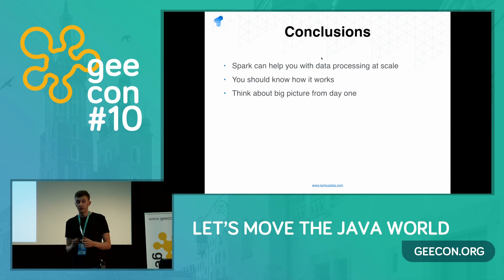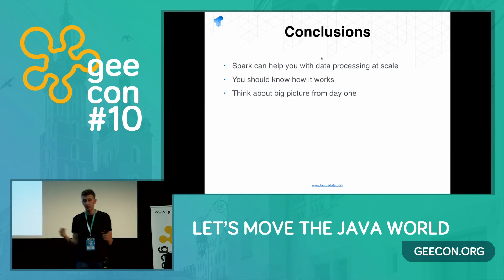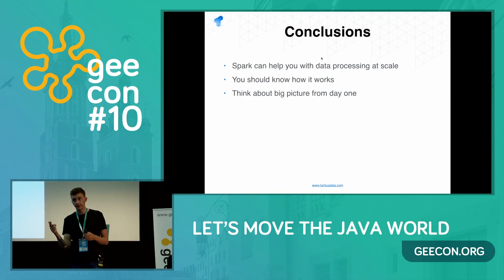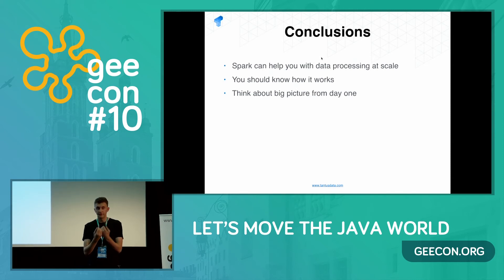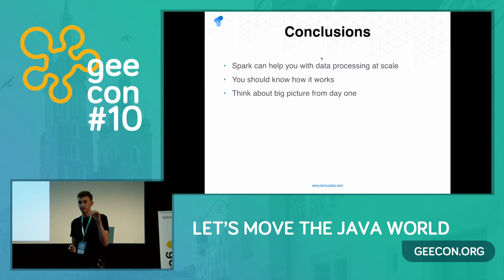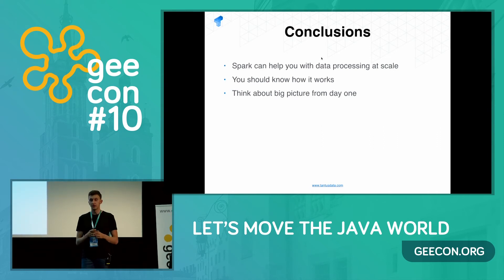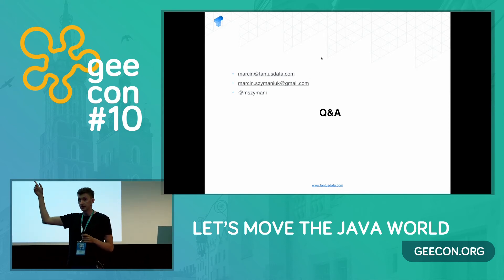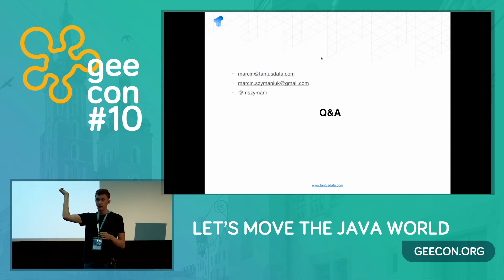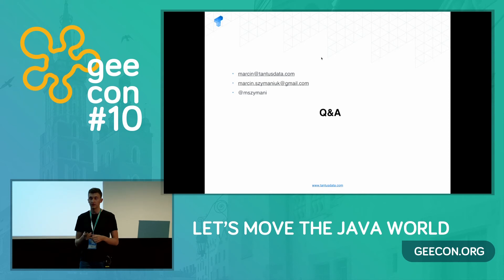The key bullet points: Spark can help you with processing data at scale and distributing the load — that's for sure. But you also need some understanding of how it works in order to write efficient Spark jobs and avoid frustration. Think about the big picture and the bottom of the triangle from day one — that will really pay off. I've posted the presentation on my Twitter account, and I already have a draft blog post describing what I covered here, so follow me and I'll post it soon. Happy to take questions now.